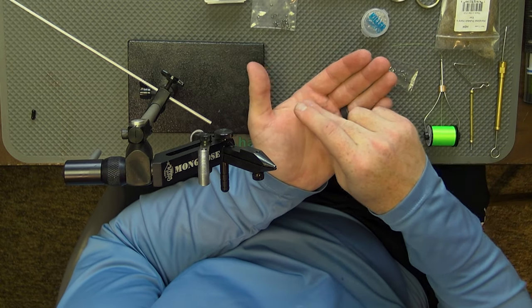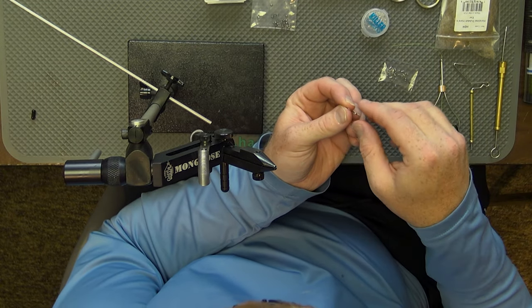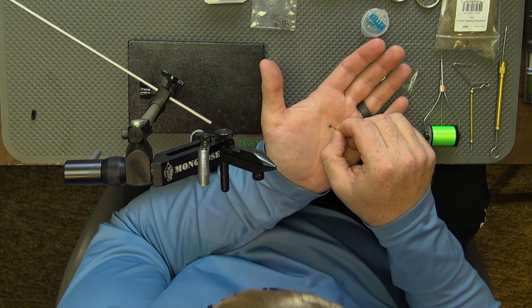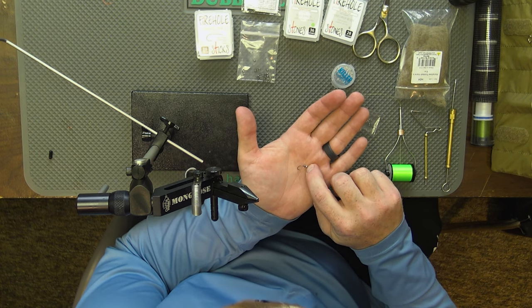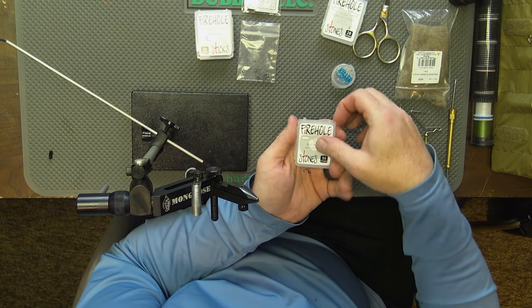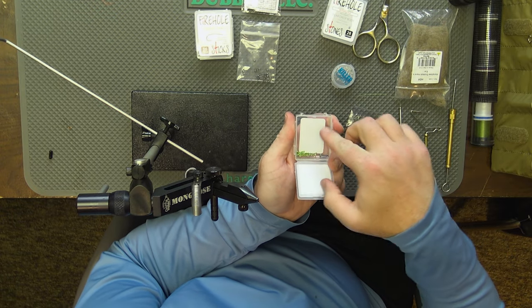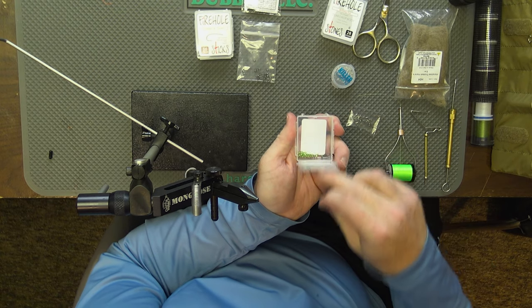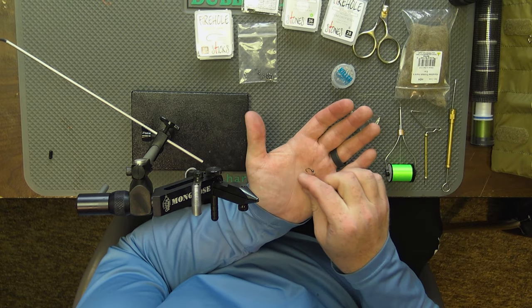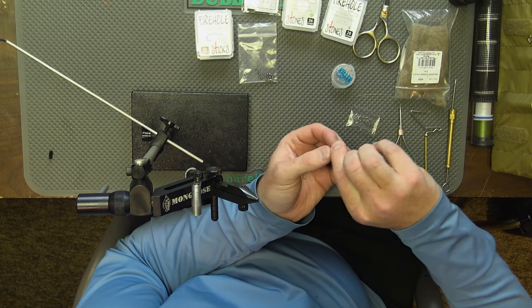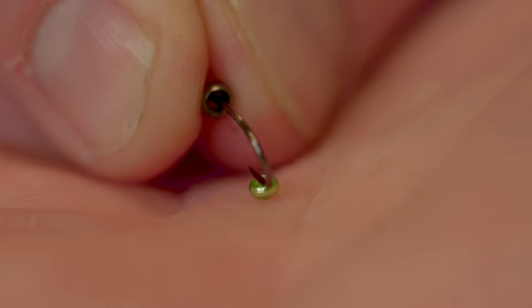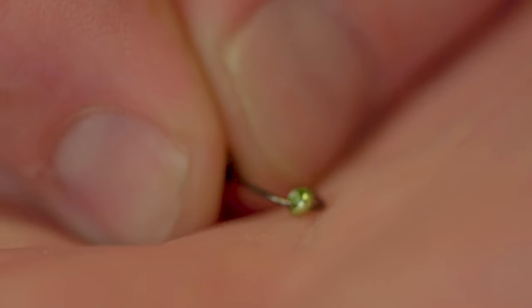Then the next thing we're going to do is add on our tungsten bead. This is a black nickel tungsten bead and we're actually going to put this on backwards from what you normally would. We're going to put the countersunk side facing forward and that actually helps nest it up against that glass bead really nicely. Then we'll come in with a little bit more Firehole product, this is their bug band. This is an awesome product, this is the radiant green color and the 3/32nds for this size. And then this one I am going to put on there with the countersunk facing forward.